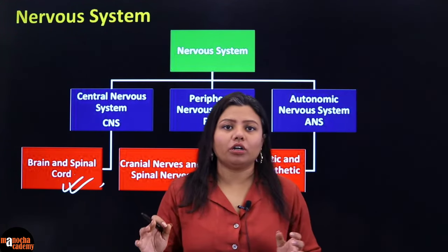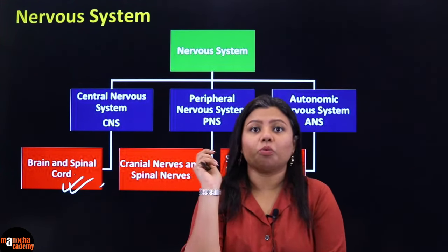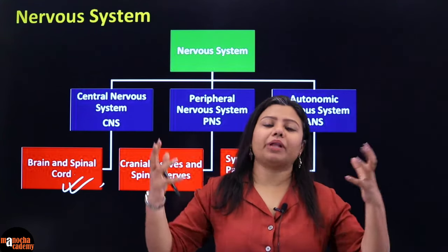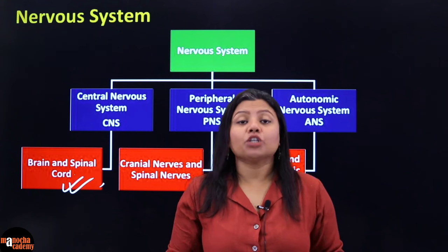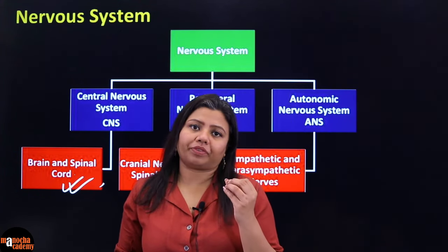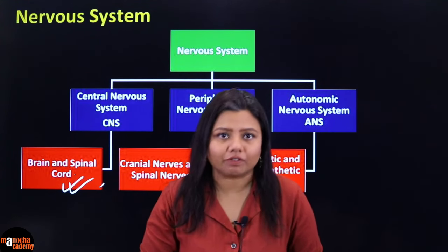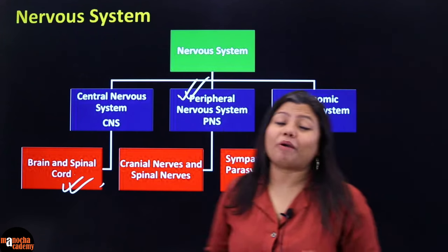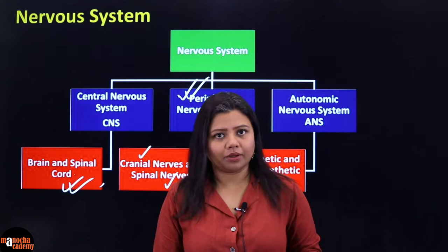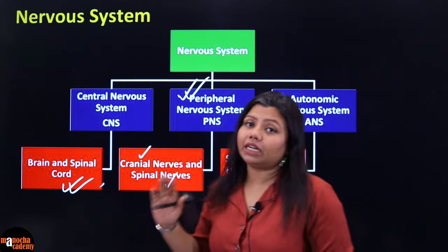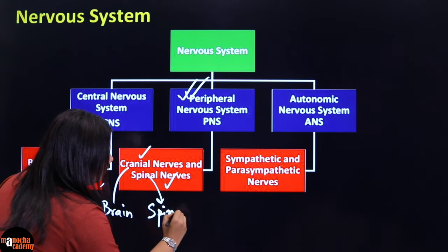Your brain and your spinal cord, to react, will have to have information. So you have to send information to your brain and spinal cord about what is happening outside. After the brain and the spinal cord decide what to do, they also have to send the response to whichever part of your body the response will be shown. For that you need projections from your central nervous system to go to the peripheral parts of your body — that is the outer part — and those are the nerves. The nerves form the peripheral nervous system, because nerves go to the periphery of the body. There are two types of nerves: cranial nerves, which are connected to the brain, and spinal nerves, which are connected to the spinal cord.